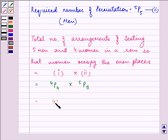That is 4 factorial divided by 4 minus 4 factorial, multiplied by 5 factorial divided by 5 minus 5 factorial. That is equal to 4 factorial times 5 factorial.